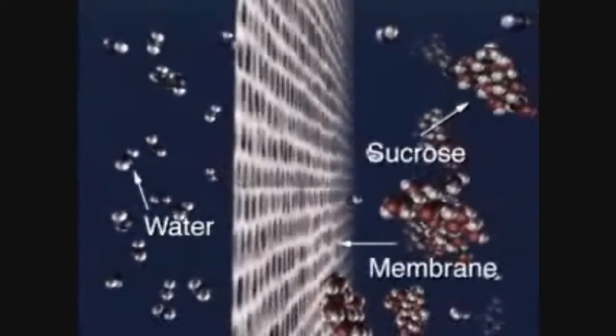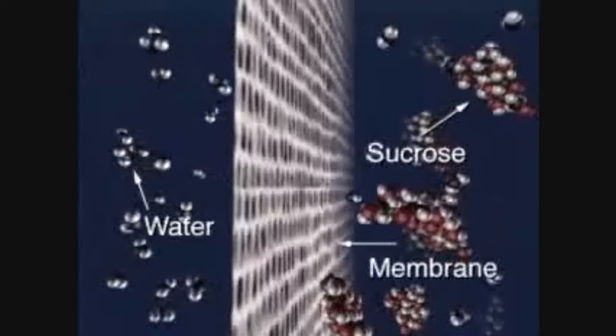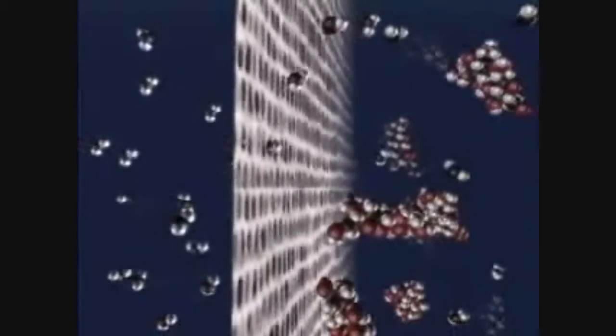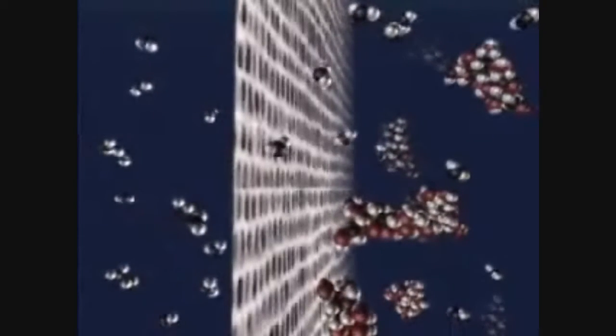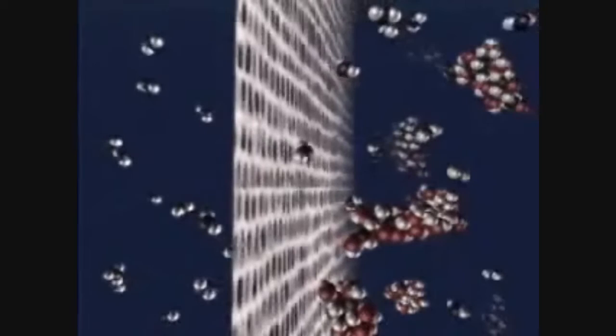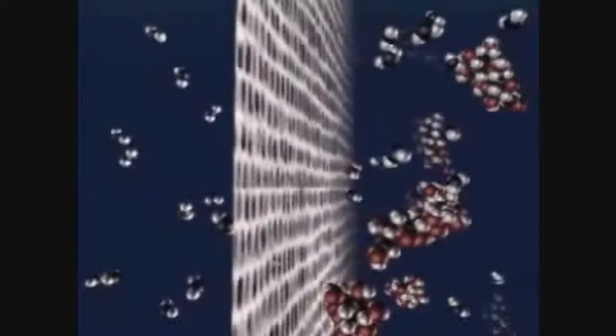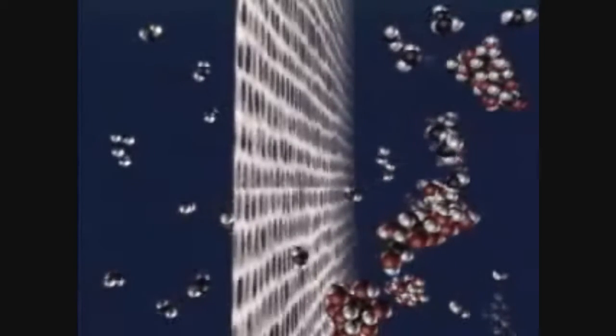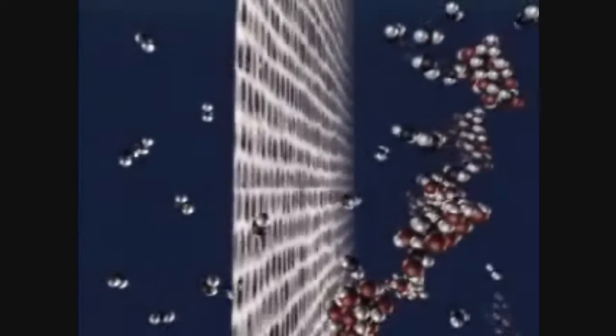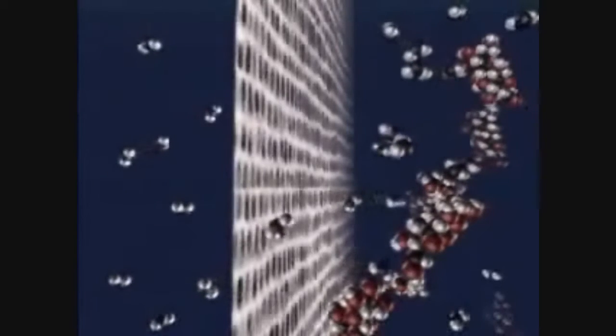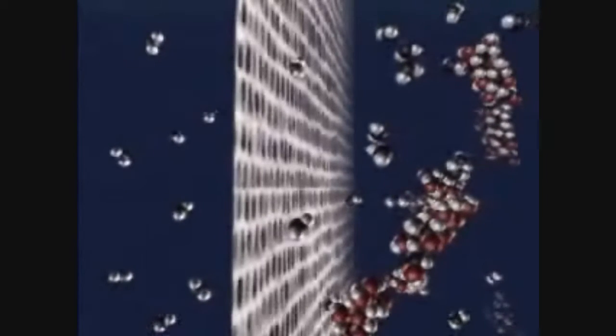In this animation, there is water on the left and sucrose on the right. They are separated by a membrane. The membrane is selectively permeable, and the small molecules of water can pass in and out without disturbance. On the other hand, sucrose is too large to fit through the holes.